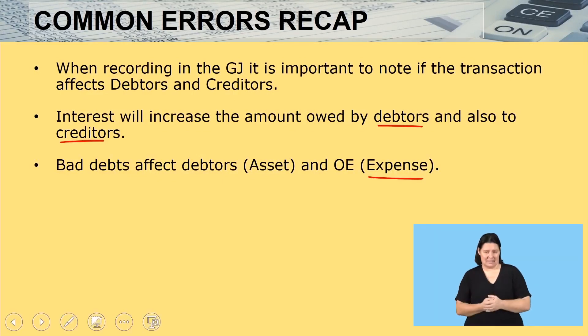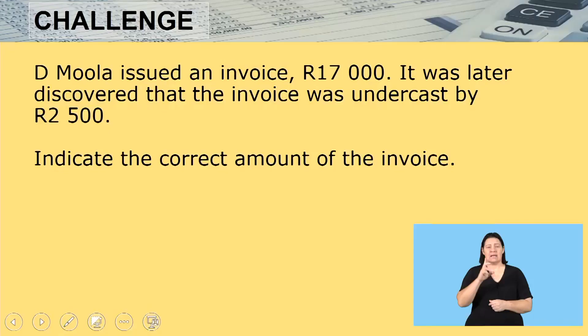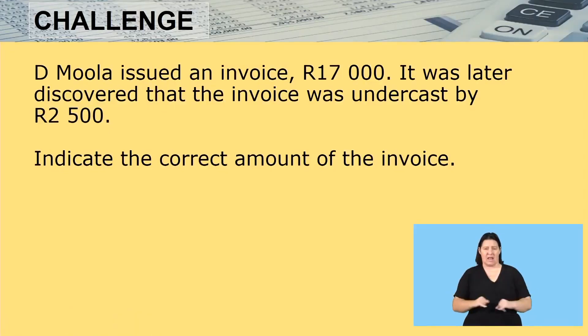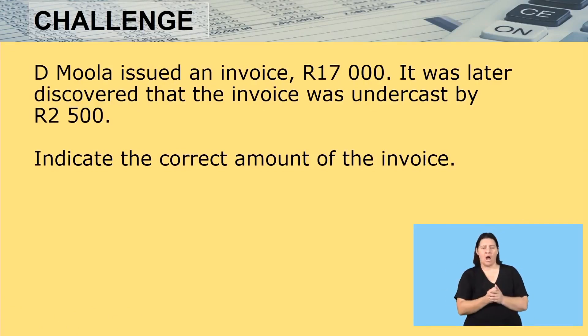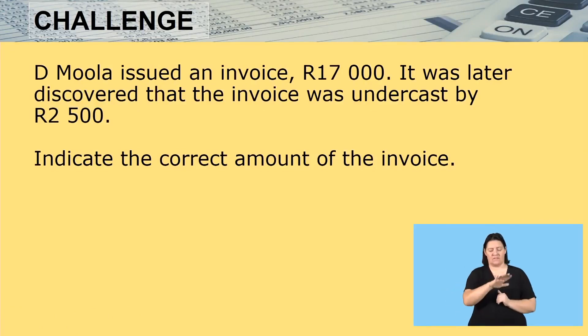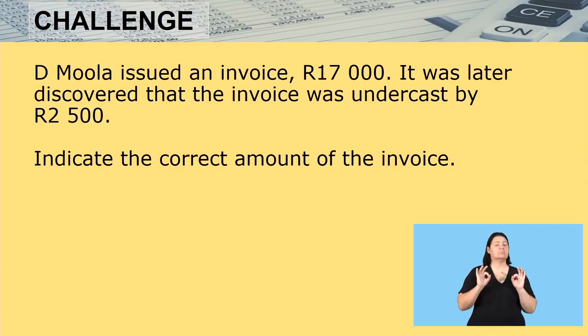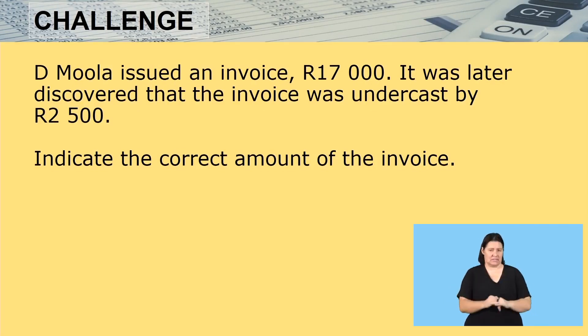With me here, I have a challenge and it reads: D. Muller issued an invoice of $17,000. It was later discovered that the invoice was undercast by $2,500. Indicate the correct amount on the invoice.